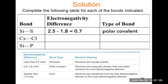For cesium and chlorine bonded together: cesium has an electronegativity of 0.7 and chlorine is 3.0. Doing 3.0 minus 0.7 gives a difference of 2.3, which is greater than 1.9, so the bond is classified as ionic. This is confirmed by the fact that cesium is on the left side of the periodic table and is a metal, while chlorine is on the right side and is a non-metal — ionic compounds are made of metals and non-metals.